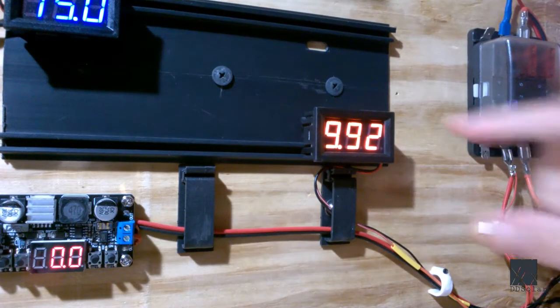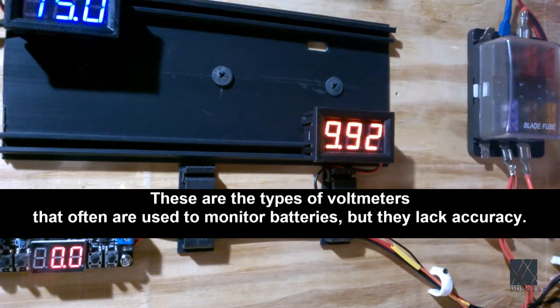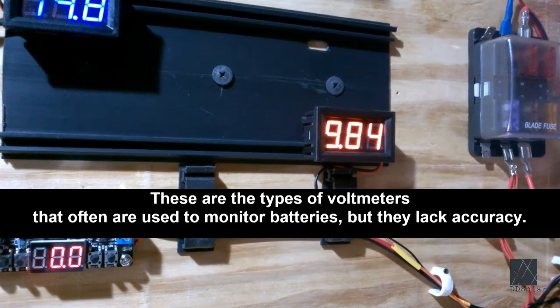There you can see the voltage on this orange voltmeter right here and that's the two 100 watt solar panels that are running that LED floodlight. Now granted it's pulled the voltage of those panels down to nine volts, but it's still putting out a ton of light.